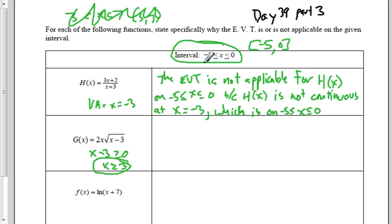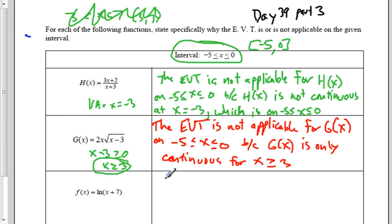I need it to be from negative 5, including negative 5, all the way up. There's going to be some points that don't work. So that tells us it's not going to be continuous. The Extreme Value Theorem is not applicable for g of x on the interval from negative 5 to 0, because g of x is only continuous when x is greater than or equal to 3.